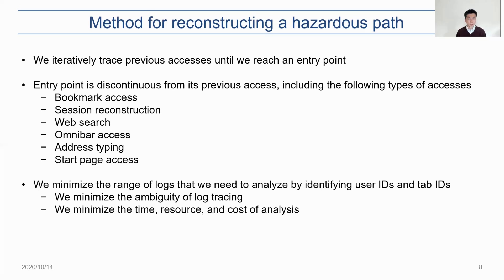To reconstruct hazardous paths, we iteratively trace previous accesses until we reach an entry point. An entry point is discontinuous from its previous access. Therefore, if the access is originated by bookmark access, session reconstruction, web search, omnibar access, address typing, or start page access, we regard it as the entry point. The judgment was mainly done by looking at the transition type. In addition, we check particular addresses to judge whether the access originated from a web search. One advantage of our scheme is that we minimize the range of logs to analyze by identifying user IDs and tab IDs, which are available because we collected data on the browser of each user.